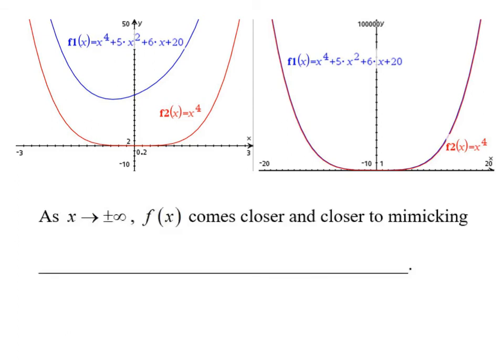So let's just make a general observation here that as x is approaching plus or minus infinity, that means we could go either direction. If x is approaching negative infinity, then we are heading to the left. And as x is approaching positive infinity, that means we're heading to the right. And in both cases, whether we're heading to the left or the right, we can see that f(x) comes closer and closer to mimicking g(x), which equals x to the fourth. And that x to the fourth is the leading term of our polynomial.